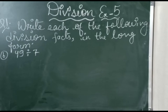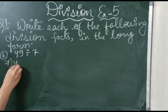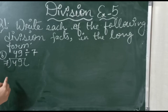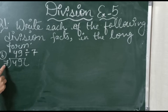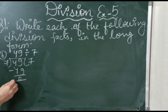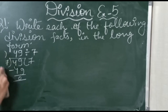The next question is 49 divided by 7. We write 7 outside and 49 inside. Here we check 4 — it is not in the table of 7. So we take 2 digits: 49. Yes, 49 is in the table of 7. 7 sevens are 49, and 49 minus 49 is 0. This is the long form of division. If you know the tables, you can directly identify how many times to take the number.